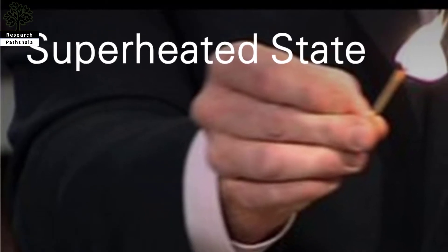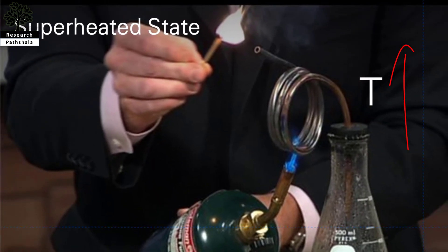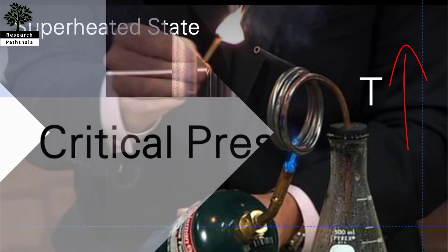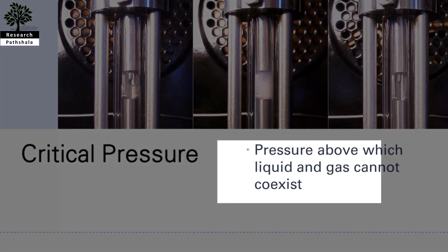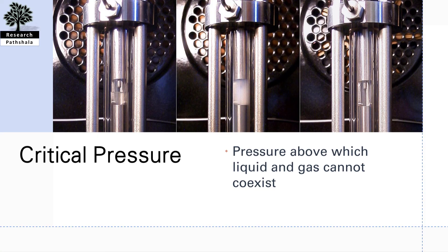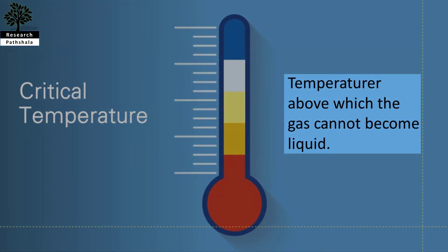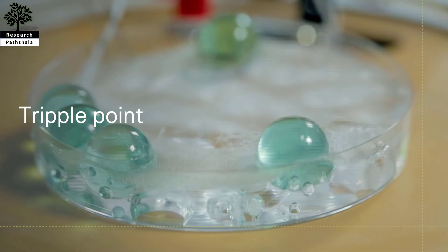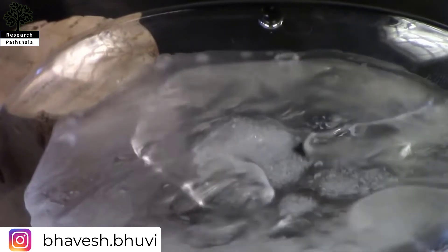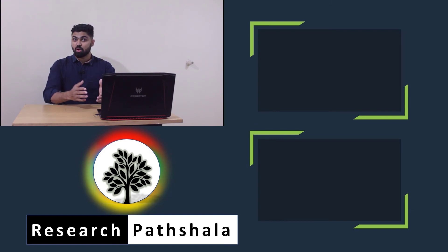What is the superheated state? It is the phenomenon in which a liquid is heated to a temperature higher than its boiling point — it is called the superheated state. The critical pressure is the pressure above which liquid and gas cannot co-exist, regardless of whatever temperature is applied. The critical temperature for a pure substance is the temperature above which the gas cannot become liquid regardless of the applied pressure. The triple point is a very unique point — it is the point at which all three phases: solid, liquid, and gas, co-exist. This concludes the phases of pure substances, their definitions and characteristics.